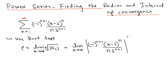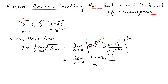Since we are taking the absolute value, the term negative 1 to the n plus 1 simply becomes 1, so we can ignore it. The bottom terms are positive, so we don't need the absolute sign there. We can write this as the limit as n goes to infinity of the absolute value of x minus 2 to the n, nth root, divided by n to the nth root, and we can split 3 to the n plus 1 into 3 to the n (nth root) times 3 to the 1 (nth root).